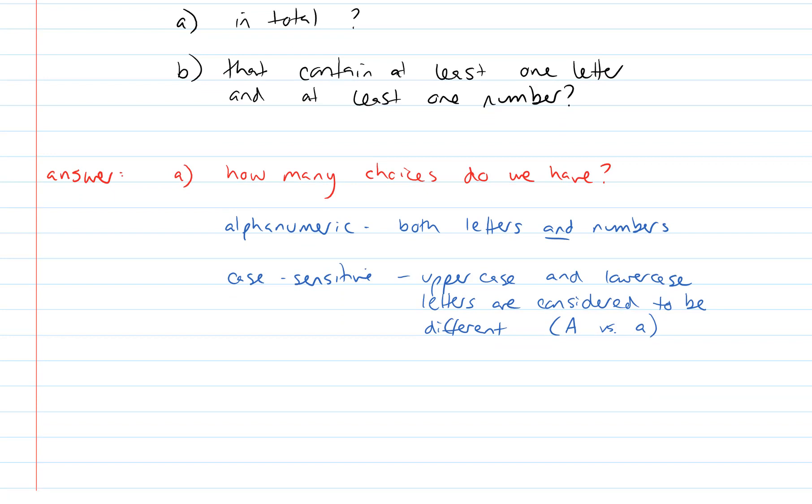And so our total number of choices is equal to the ten digits plus 26 uppercase letters plus the 26 lowercase for a total of 62.